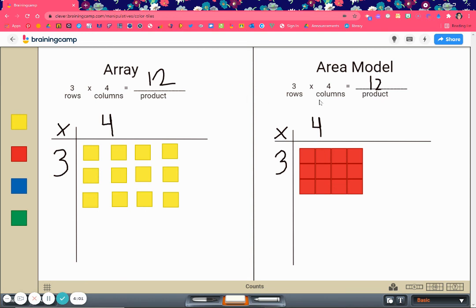So you see, arrays and area models are exactly the same. You start with your rows and then your columns. You find your product by counting them all together. It's just that area models will always be in a square or rectangle, closed shape, while the arrays will most likely have spaces between because it doesn't always use squares. It can use any type of objects that are arranged in rows and columns. So that is how you do arrays and area models.